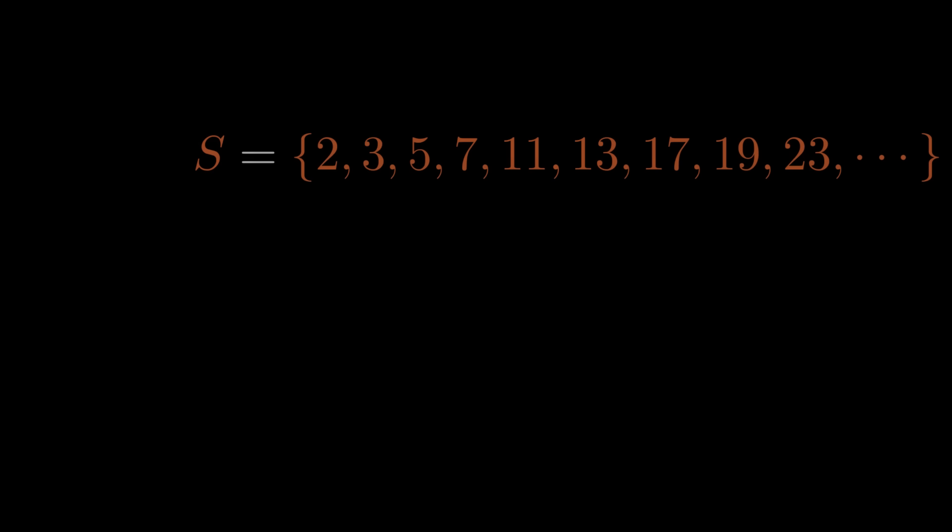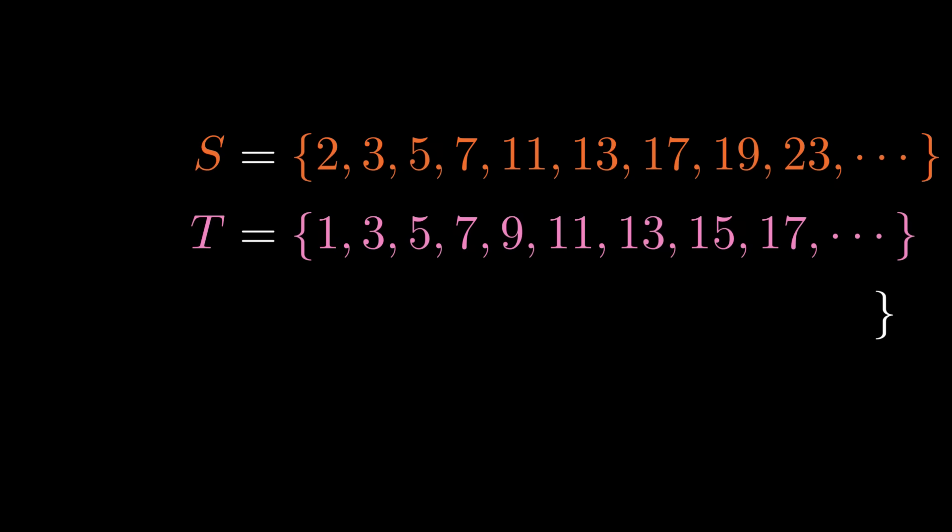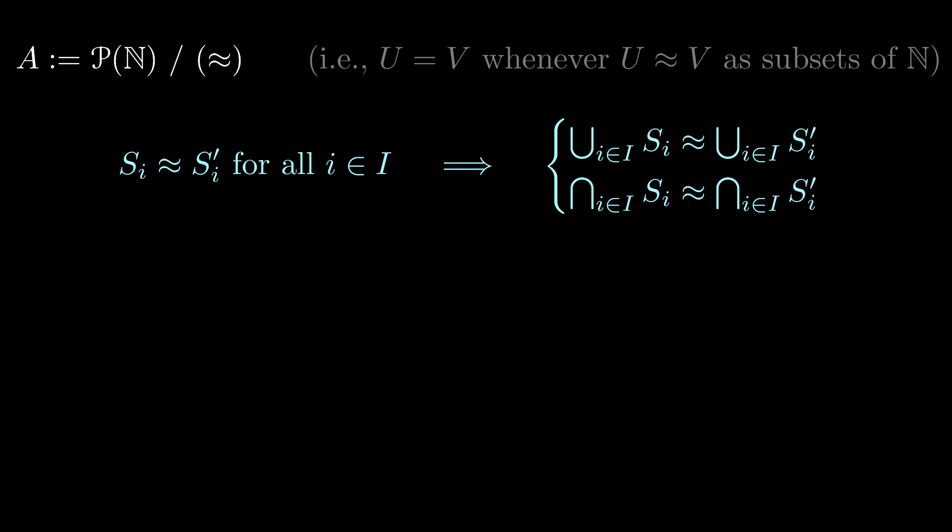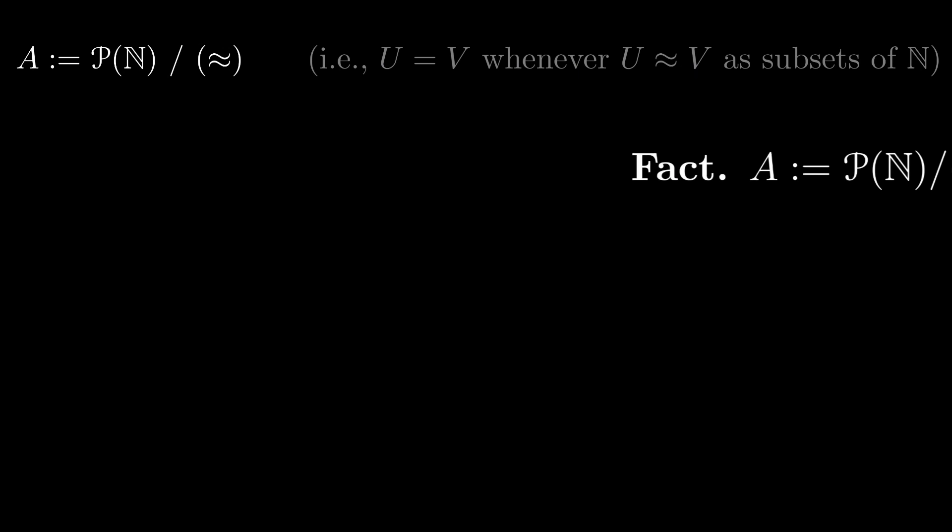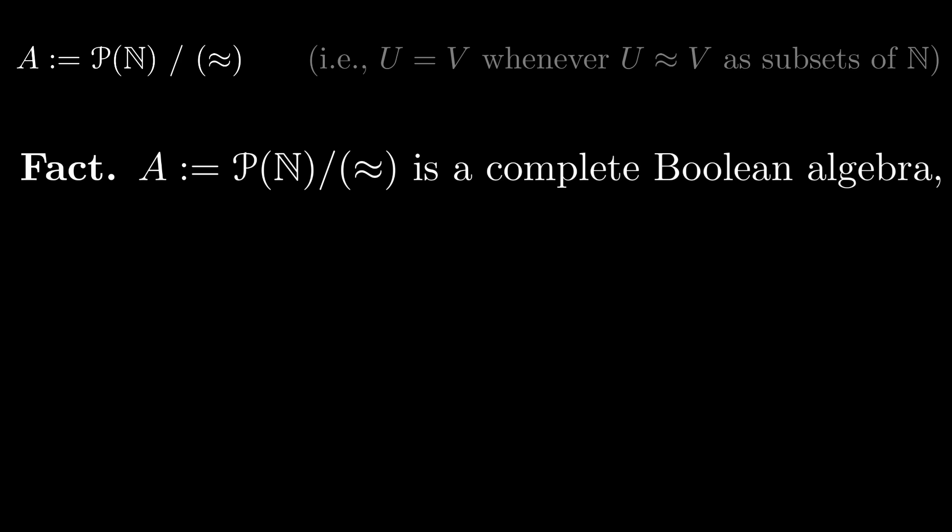On the other hand, the set of prime numbers and the set of odd numbers are not essentially the same, because the set of prime numbers contains 2 and the set of odd numbers contains every odd multiple of 9, for example, and that's already infinitely many differences. Now that we have this relationship between subsets of natural numbers, define A to be the set of all subsets of natural numbers, except that we say that two sets of natural numbers are equal in A if they are essentially the same. You can check that the unions and intersections of sets in this case descend to well-defined join and meet operations on A. Moreover, these operations define a complete Boolean algebra structure on A.